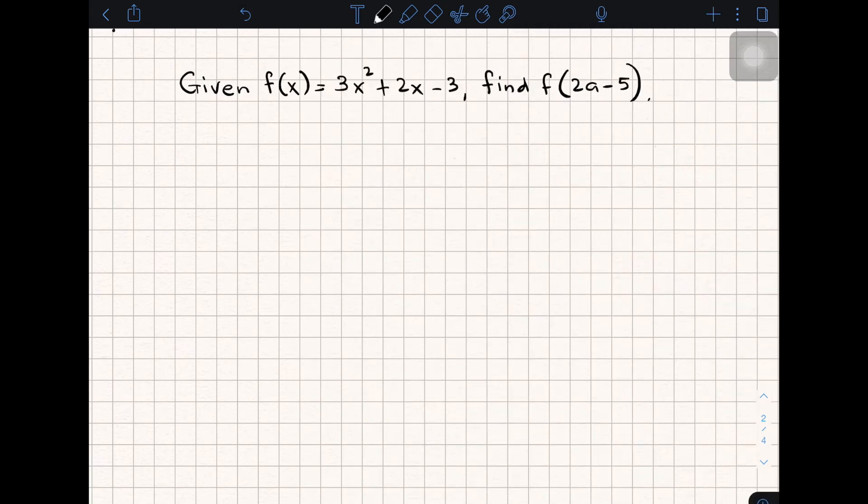Now for our second example, we have the given f(x) = 3x² + 2x - 3. This is our function, and we have to evaluate f(2a - 5). Again, this is the input, or 2a - 5 is the binomial that will replace the variable x.